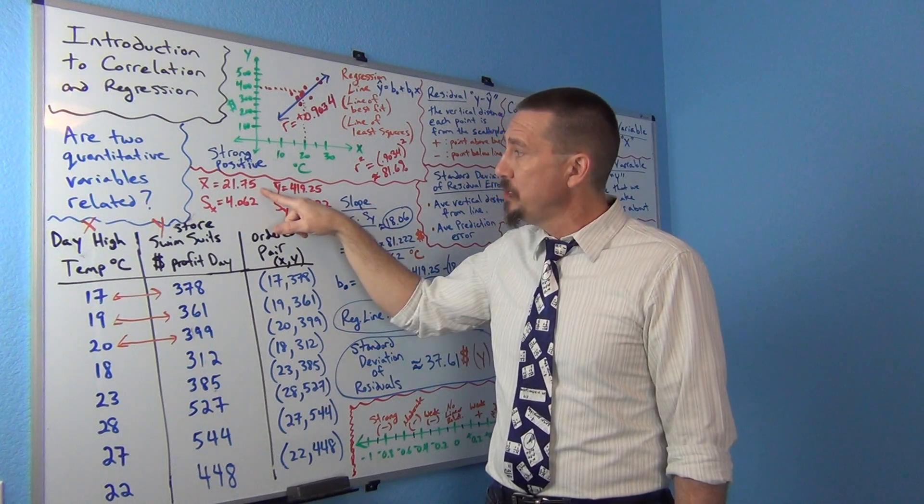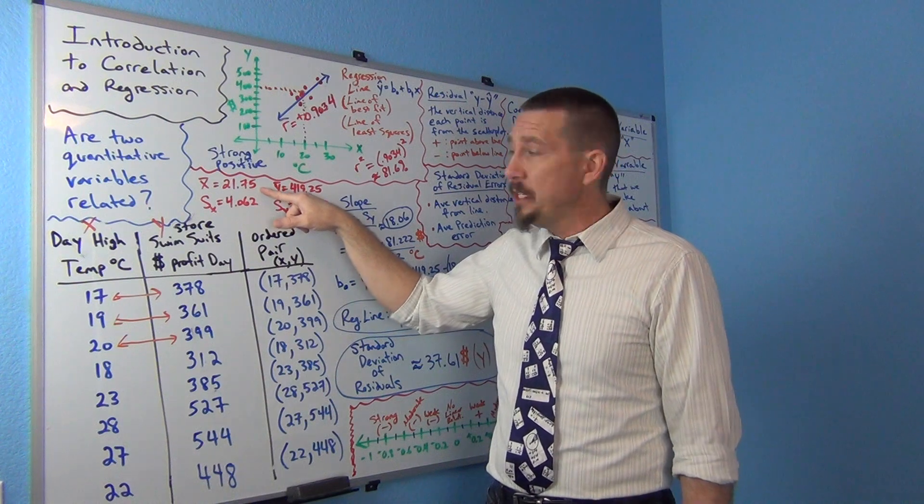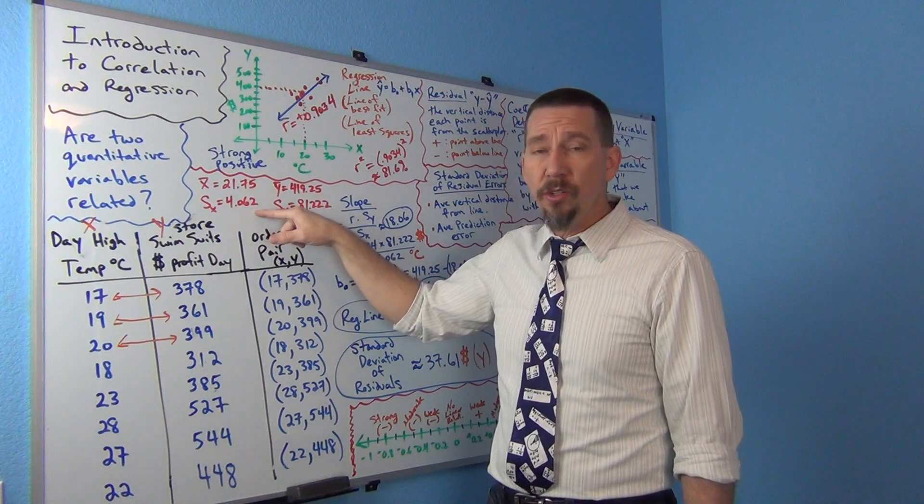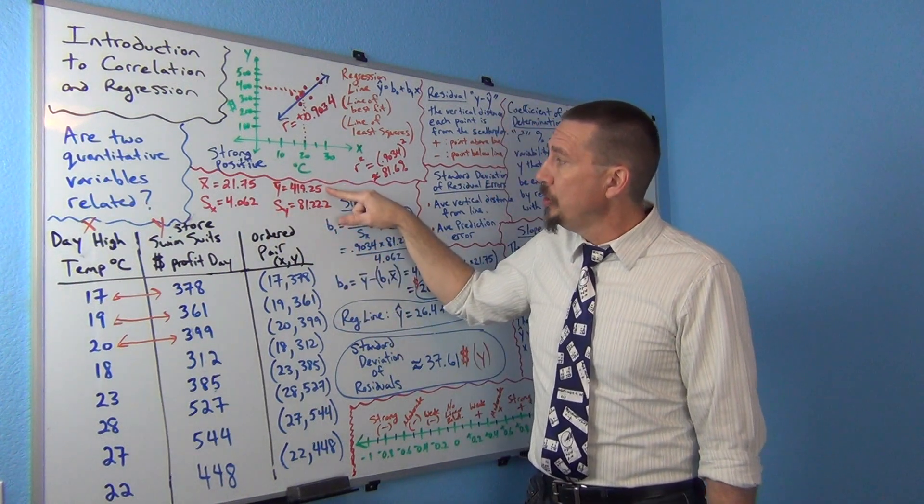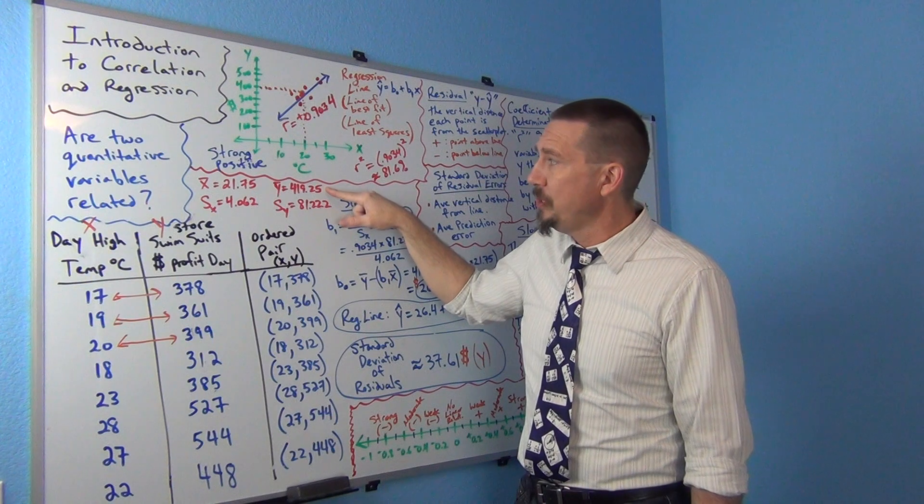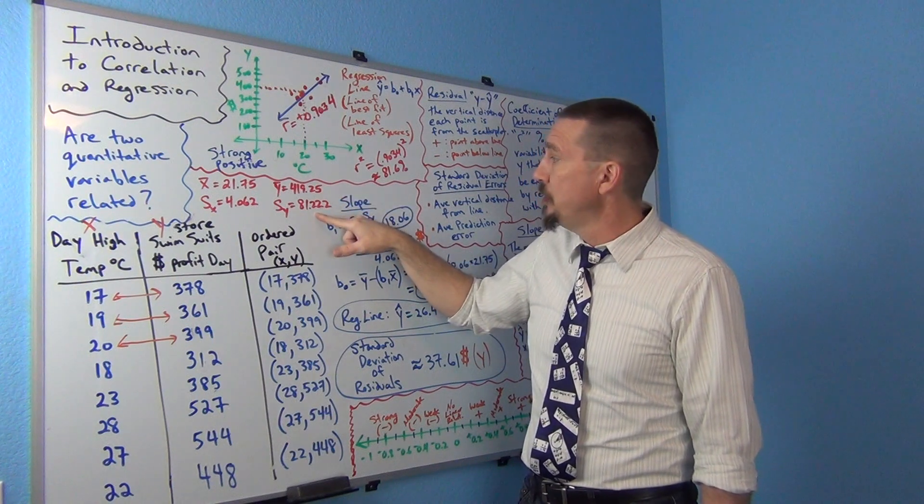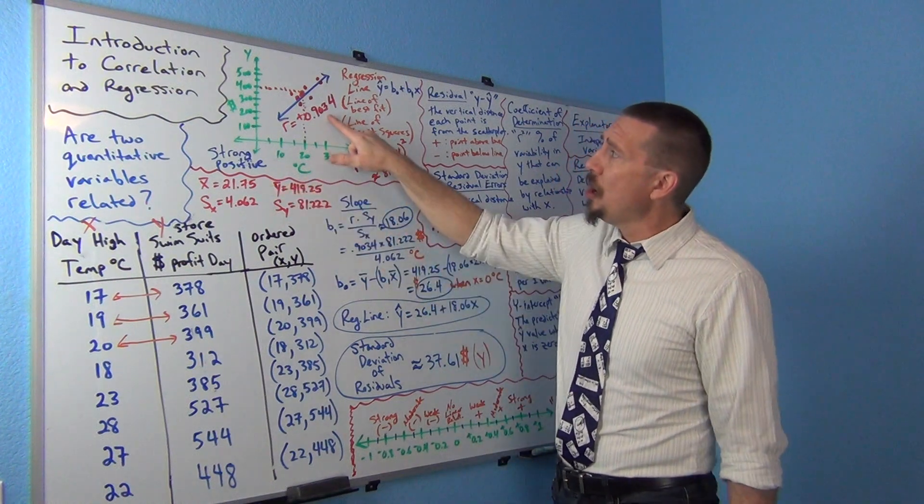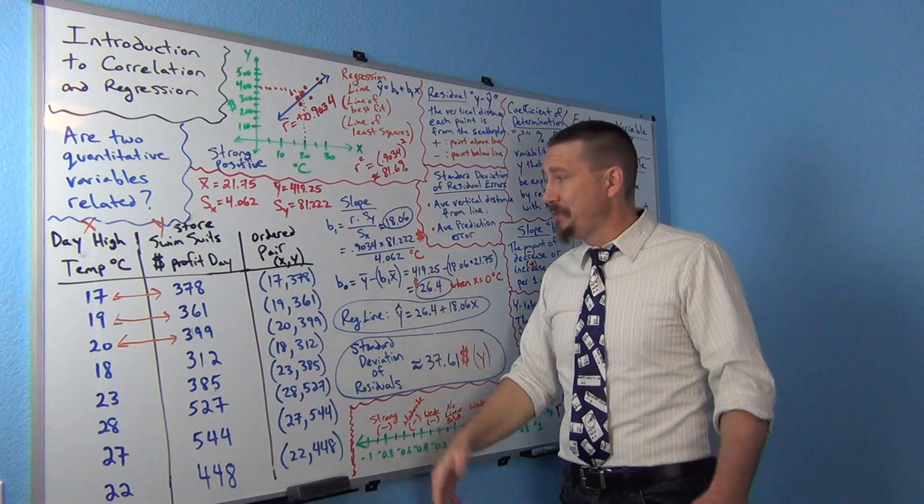But if I go ahead and have those numbers, the mean of the x's was 21.75 degrees Celsius. The standard deviation of the x's was 4.062 degrees Celsius. Mean of the y's was 419 dollars and 25 cents. The standard deviation of the y's was 81 dollars and 22 cents. Now if I have those numbers and I know r, I can actually figure out the perfect line, the line of best fit.